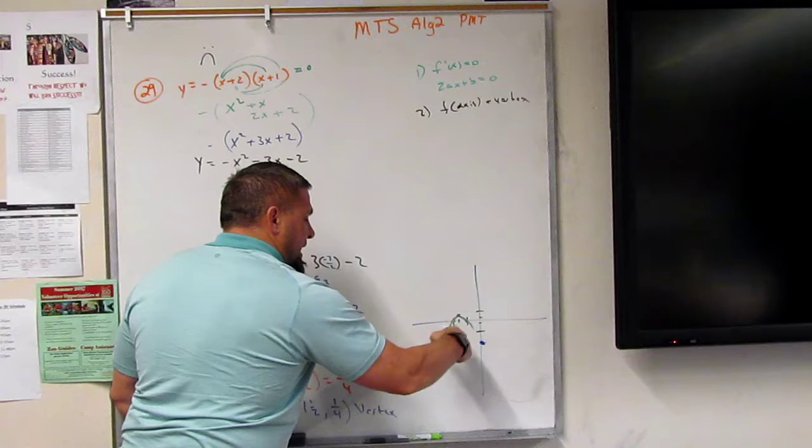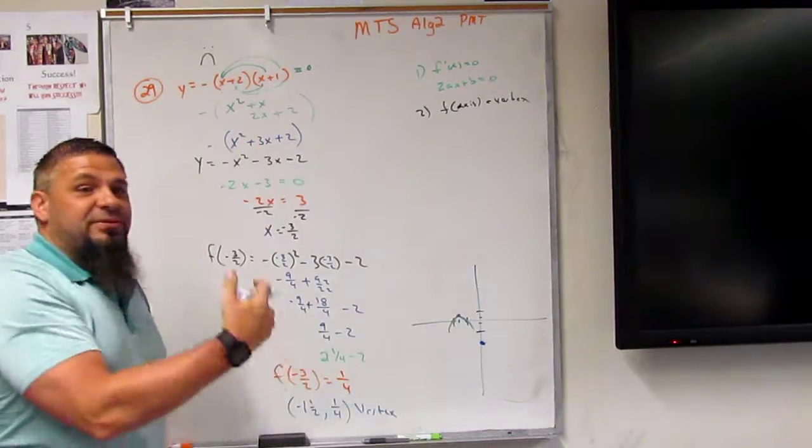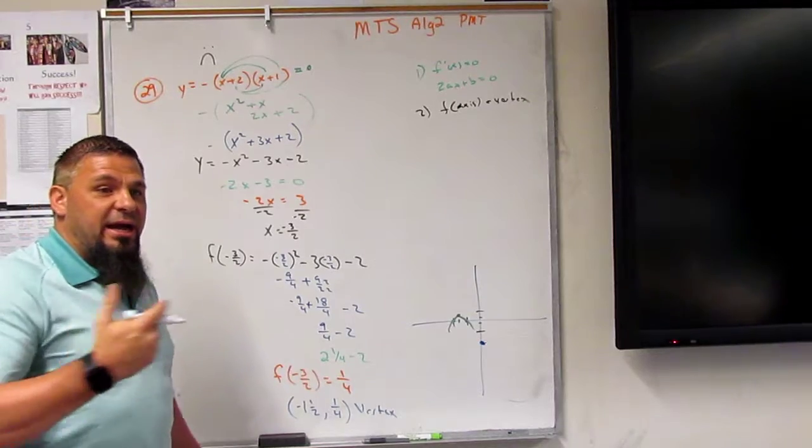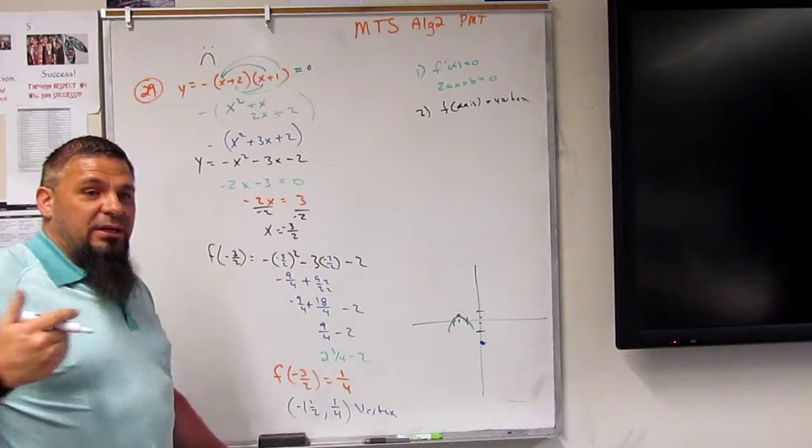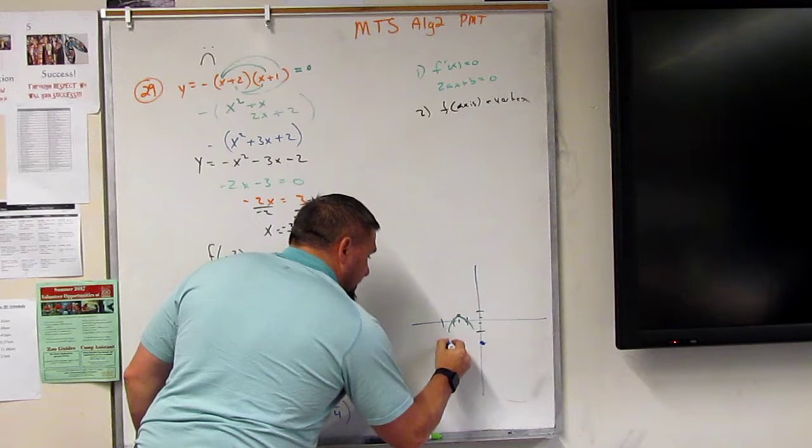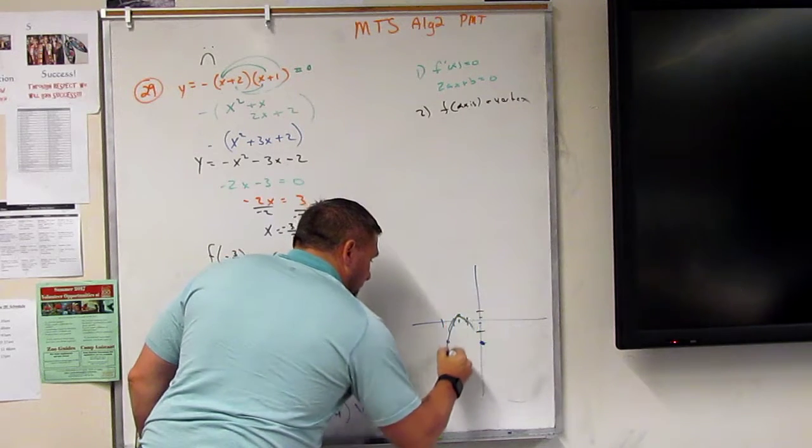And then on the other side, what's 1 1⁄2 times 2? Well, you've got two 1 1⁄2s, $2.50s. I've got $3, right? So 1, 2, 3. So over here, I'll have this one.